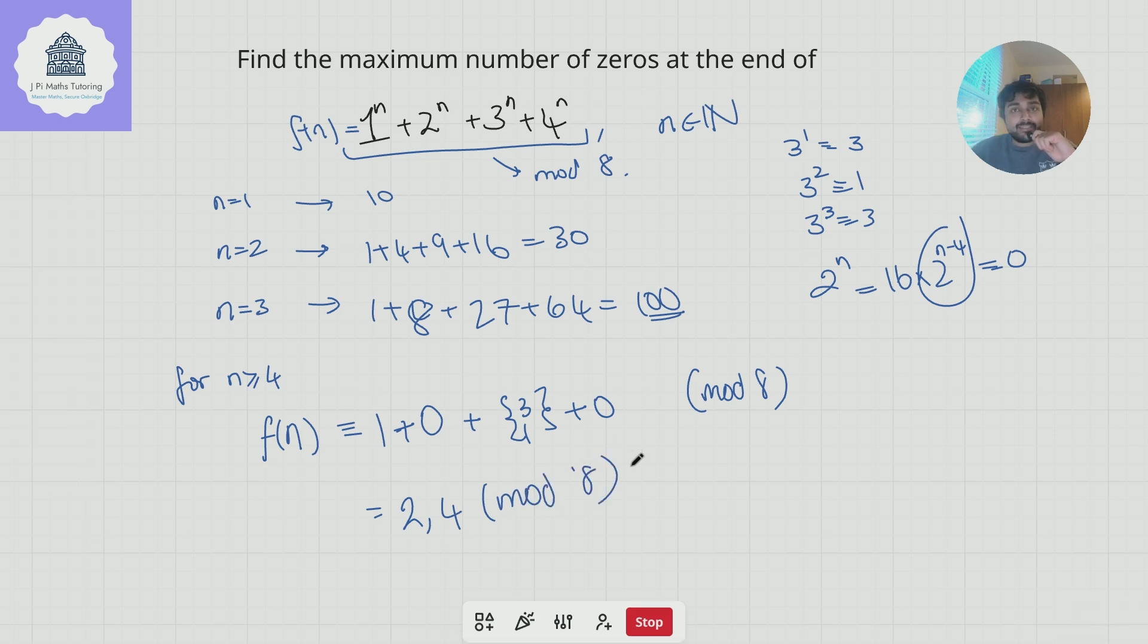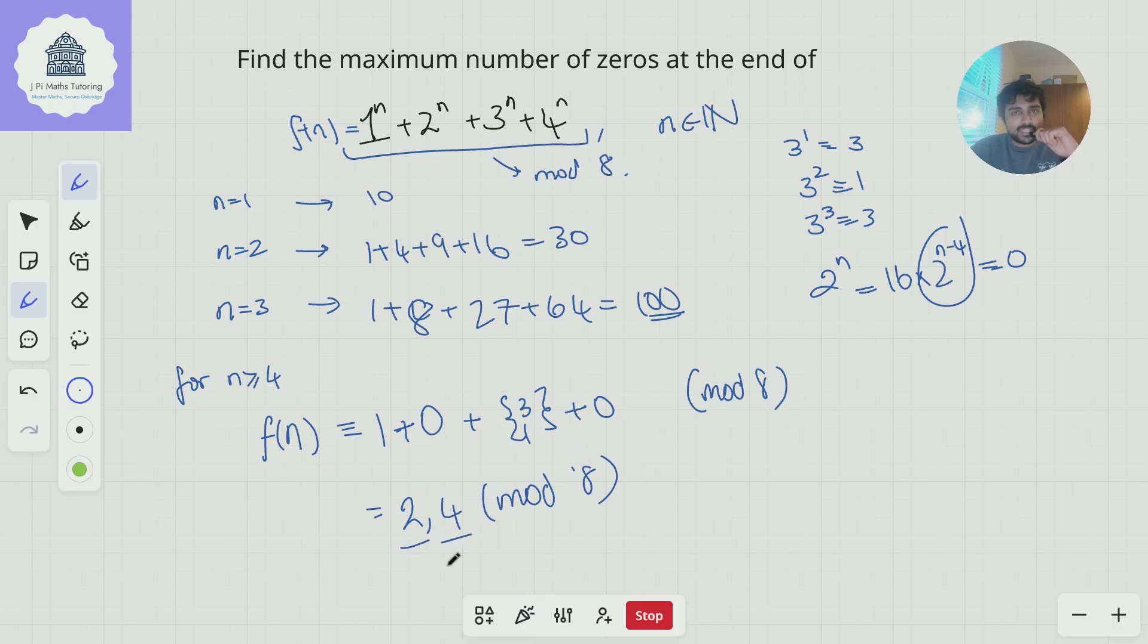But that means f(n) cannot end in 3 or more zeros. If it did, it would be a multiple of 1000, and therefore a multiple of 8. But this shows f(n) is either 2 or 4 mod 8, never 0 mod 8 when n ≥ 4.